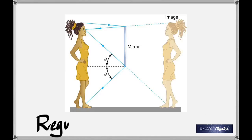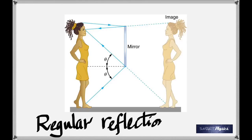That's reflection in a plane mirror — the thing we use almost every day. As people think, and as they try to sell us in stores, to get your full image, you do not need a mirror that is as big as you. As you look at this diagram, you see that mirror has a particular length — that's all that is required to get the full image. But it has to be at a certain height from the ground.